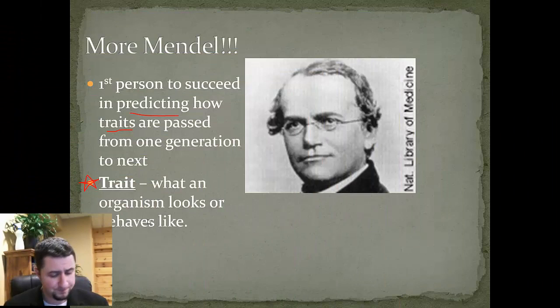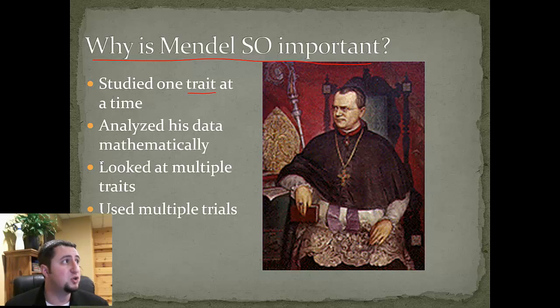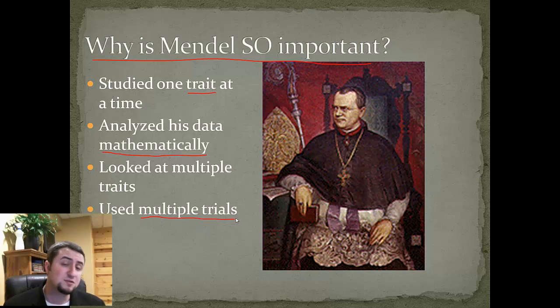Why was Mendel so important? As previously mentioned, he was the father of modern genetics. He was very important because he studied one trait at a time, and more specifically, he was one of the first to actually use the scientific method. He used math to analyze his data, looked at multiple traits, and used multiple trials — he didn't just do this thing once, he tested it over and over, which is really good science.